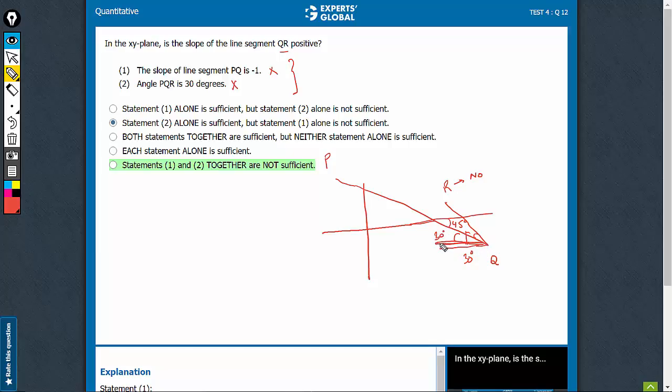So from higher, it's going lower, something like this. This is the other possibility of R and in this case, you see that it is again falling. QR is like this. So the slope is negative here also.